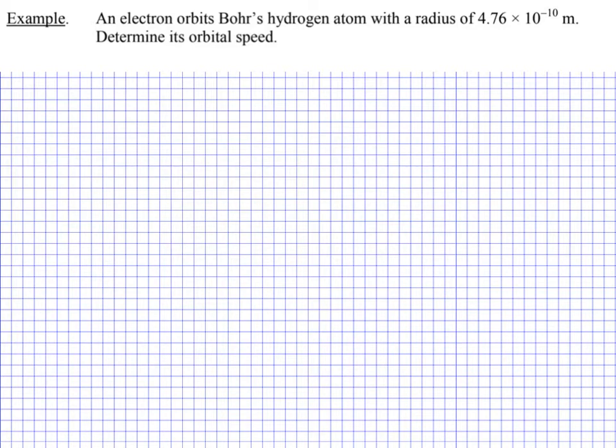So here we have a question. We're talking about an electron that's orbiting a Bohr hydrogen atom and somehow we know the radius. We need to determine the orbital speed.